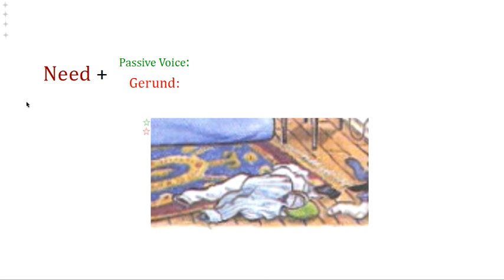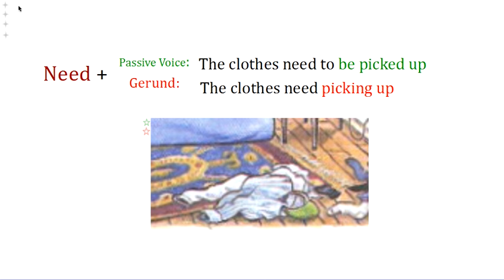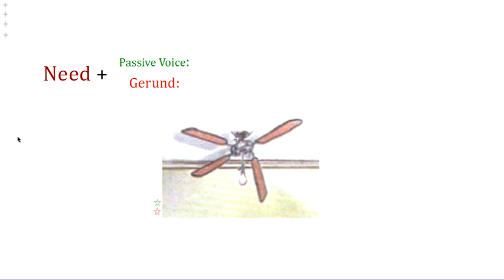Let's look at the different problems we saw. Remember, there are always two ways to say what needs to happen — I can use 'need' in the passive voice, and I can use 'need' with the gerund. For the clothes on the ground, in the passive voice: 'the clothes need to be picked up.' Or with the gerund: 'the clothes need picking up.' For the fan — the fan was broken — in the passive voice: 'the fan needs to be fixed.' Or in the gerund: 'the fan needs fixing.'